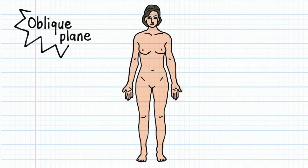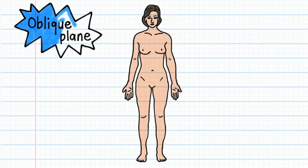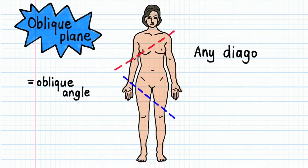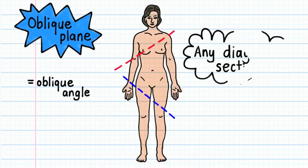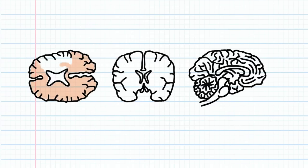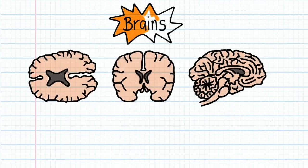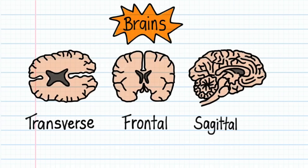Finally, there is an oblique plane, which passes through the body at an oblique angle. The importance of understanding planes becomes obvious when you look at these three drawings of the brain cut in sagittal, frontal, and transverse section. Note how different each brain section appears, and how some features — like for example the pons — are easy to see in one section but difficult to observe in others.